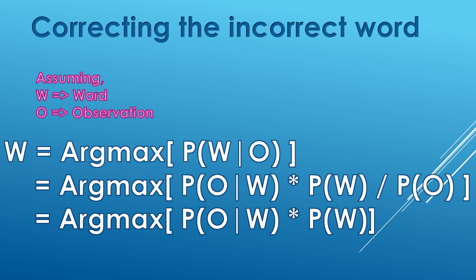That is, in order to find out the correct word which best matches the observation, we need to find argmax of probability of O given W into probability of word.